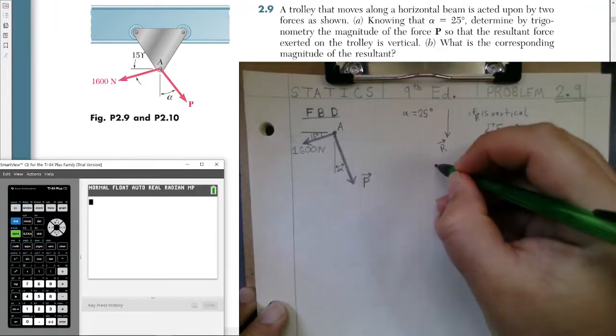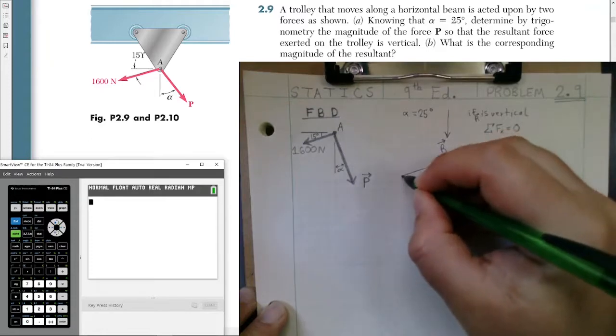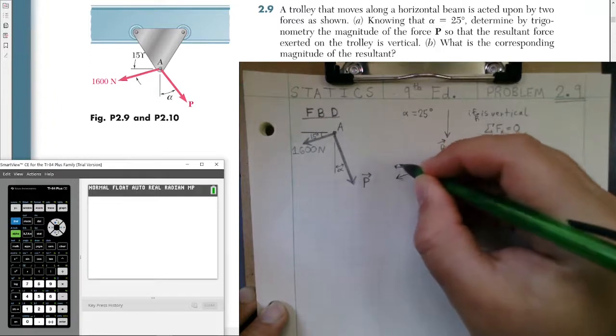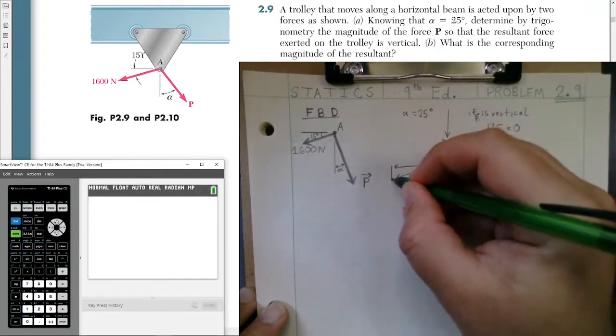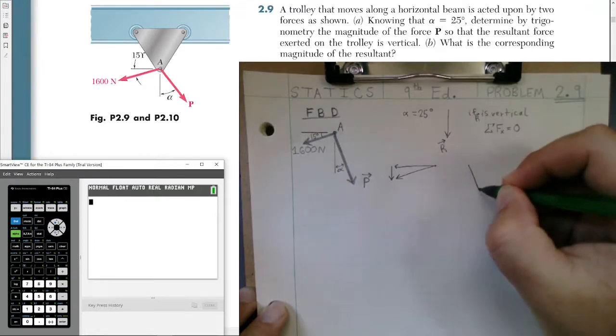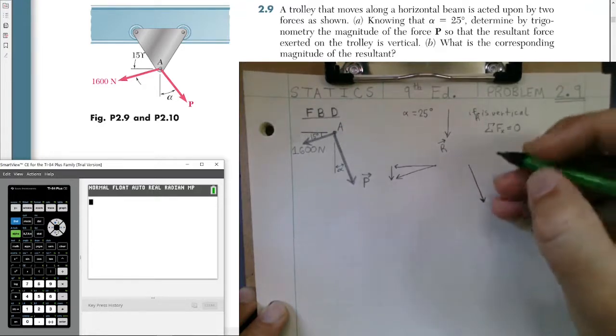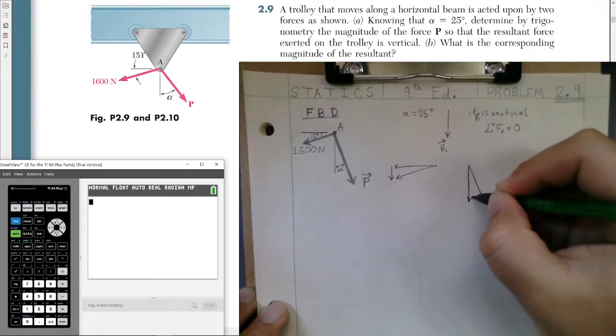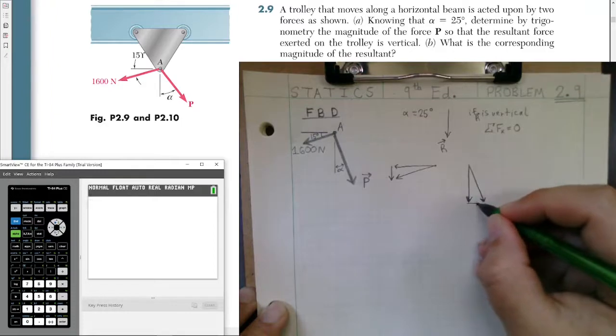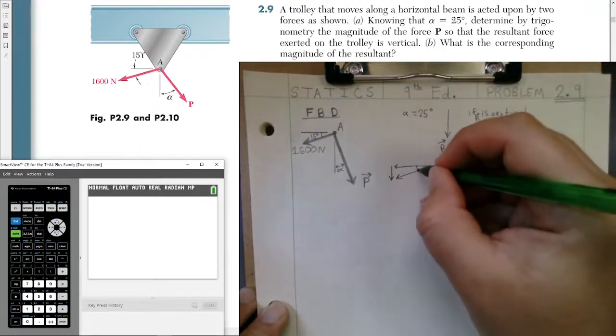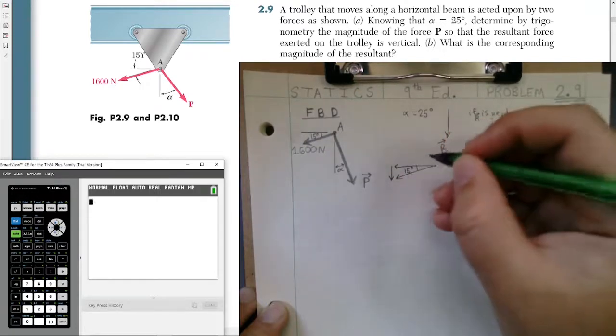So I'm going to draw another free body diagram for the 1600 newtons force and find its components. When I do that, I'm going to also go ahead and draw a free body diagram for vector P, breaking it down into its components as well. So it has a horizontal and a vertical component for each vector. So this will be our 25 degree angle alpha, and this will be our 15 degree angle that's given to us as well.